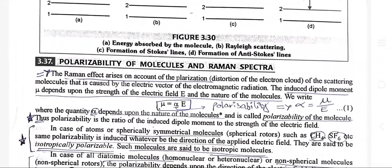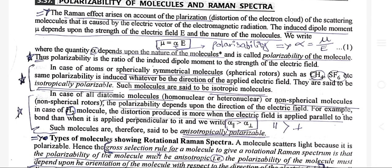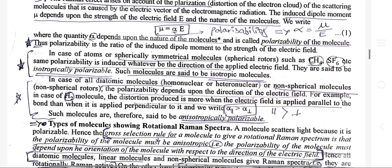Polarizability of the molecule and the Raman spectrum: the Raman effect arises on account of polarization of the scattering molecule caused by the electric vector of the electromagnetic radiation. The induced dipole moment μ depends upon the strength of the electric field E and the nature of the molecule, where μ = αE. The quantity α depends upon the nature of the molecule and is called the polarizability of the molecule.